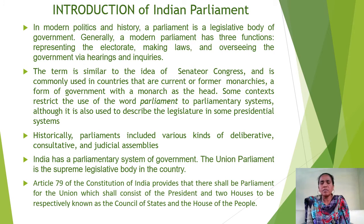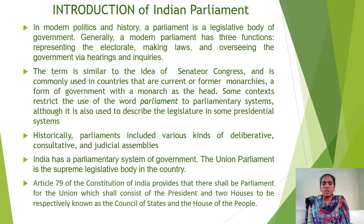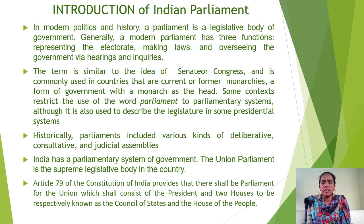Historically, parliaments included various kinds of deliberating, consulting, and judicial assemblies. India has a parliamentary system of government where the union legislature is called parliament, which is the supreme legislative body in the country. The position of parliament in the Indian Constitution stands in Article 79, which provides that there shall be a parliament for the union consisting of the President and the two houses — the Lok Sabha and the Rajya Sabha.